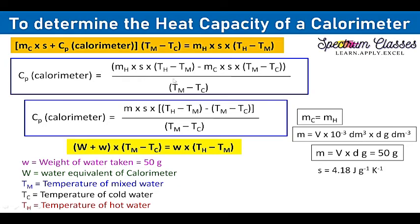This is simple mathematics. Taking common factors outside — since the mass of cold water equals the mass of hot water, we can write mass times specific heat taken outside the bracket, giving: Cp calorimeter = m × S × [(Th - Tm) / (Tm - Tc) - 1]. On solving this I am going to get the value of the heat capacity of the calorimeter. Here volume is in cc — volume in dm³ times 10⁻³ dm³ times density in grams per dm³ — and in this manner we get volume times density in grams.